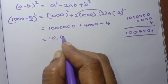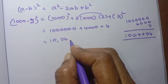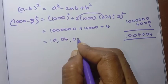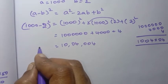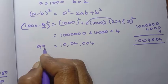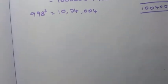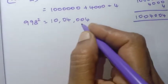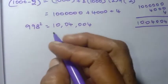So 1000 into 1000 is 1,000,000, minus 2 into 1000 into 2 which is 4000, plus 2 square which is 4. The answer is 996,004. Therefore 998 square equals 996,004.